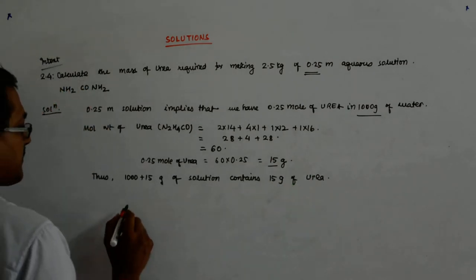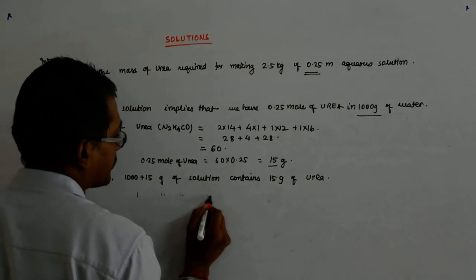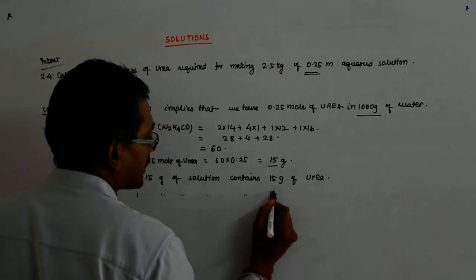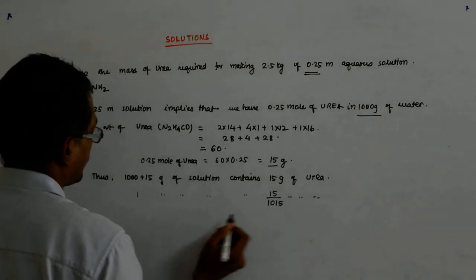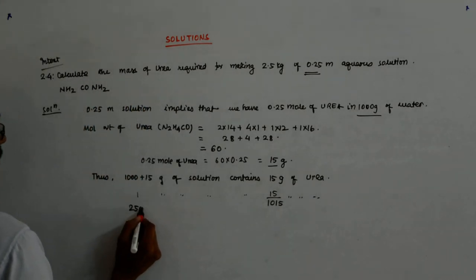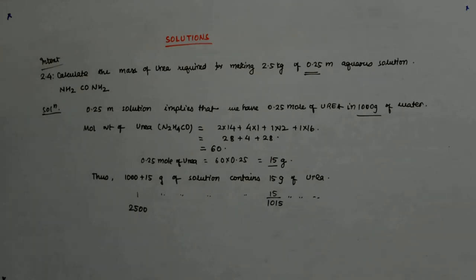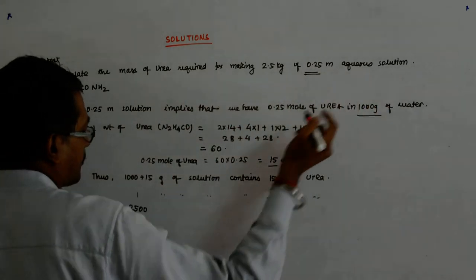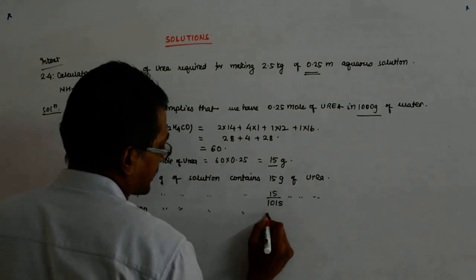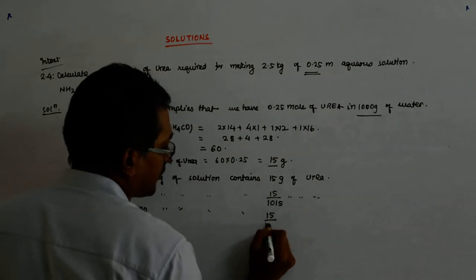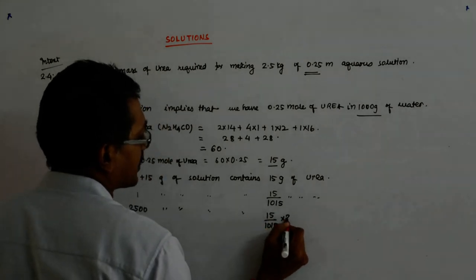So 1 gram of solution contains 15 upon 1015 grams of urea. And we want 2.5 kg of that solution. 2.5 kg of that aqueous solution. So that is 2500 grams of solution contains 15 upon 1015 into 2500.